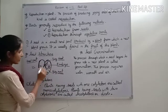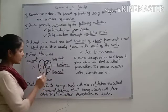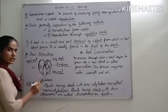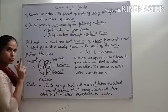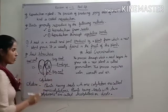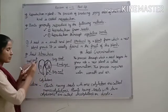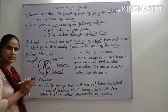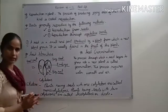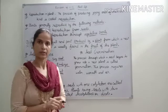Is seed ke aapko jo two parts dikhha hai — one and second. Ye seed ke two cotyledons hai. Is type ke seed jis plants ke hote hai un plants ko bolte hai dicotyledon — that is the short name, dicotyledon.